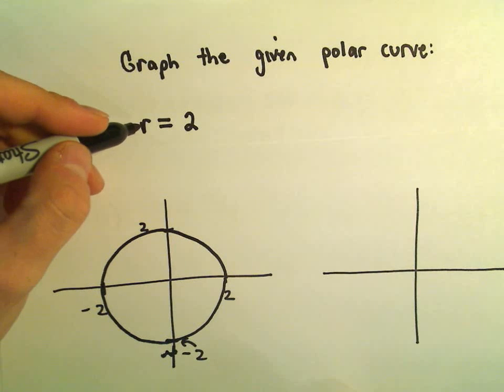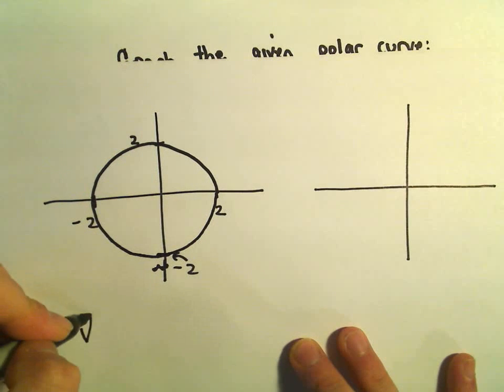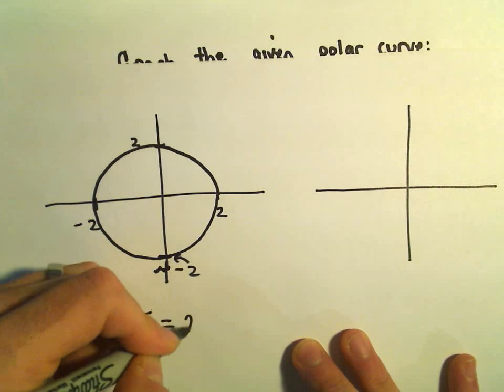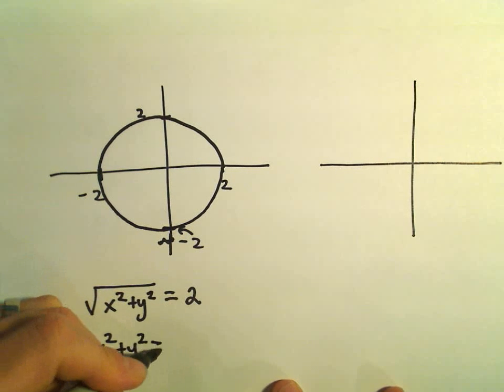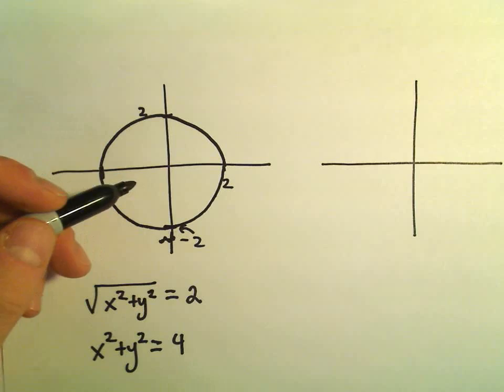And again, you can see that because we know that r, we could rewrite r as the square root of x squared plus y squared equals 2. And if you square both sides, we get x squared plus y squared equals 4. And again, x squared plus y squared equals 4. That's just going to be a circle of radius 2.